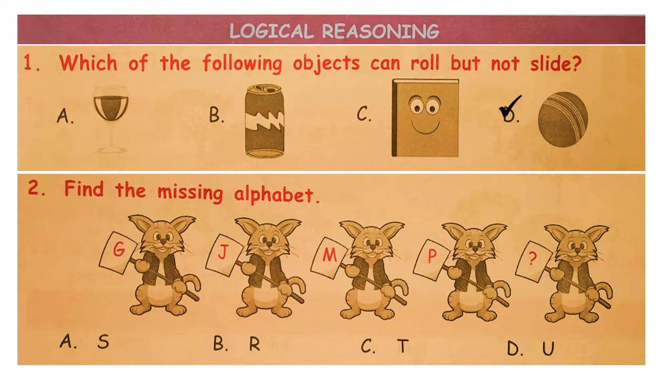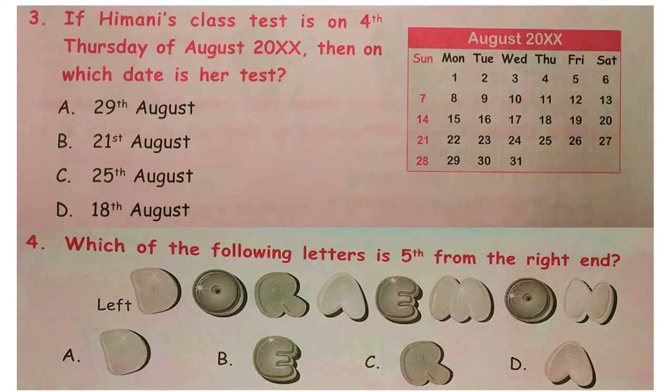Find the missing alphabet. Kids need to understand the pattern: G, H, I, J, then K, L, then M, N, O, P, then Q, R, S. So the answer is S, option A.